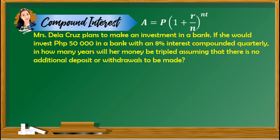In compound interest, we are following the formula A, which stands for the future value or ending amount, is equal to P, the principal or beginning amount, times 1 plus R, which is the interest rate, over N, which refers to the number of compounding periods in a year, raised to the power of N times T, where T refers to the number of years.